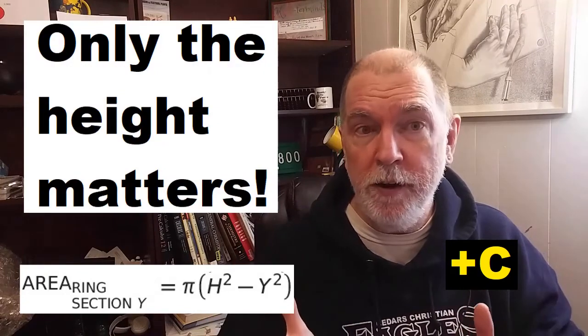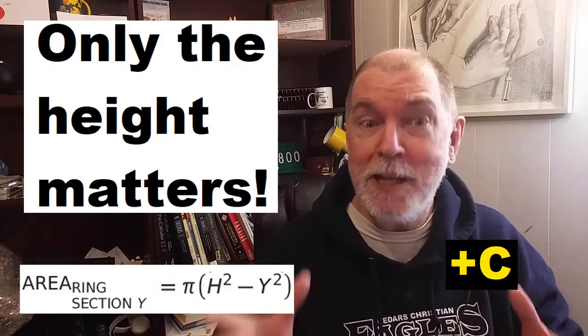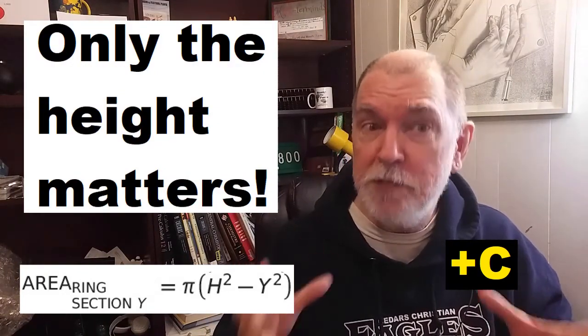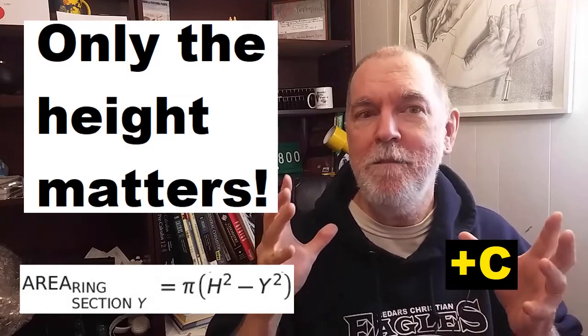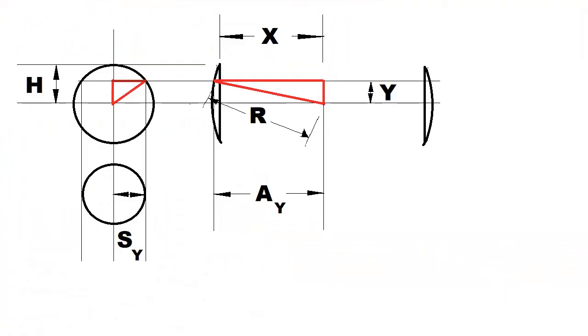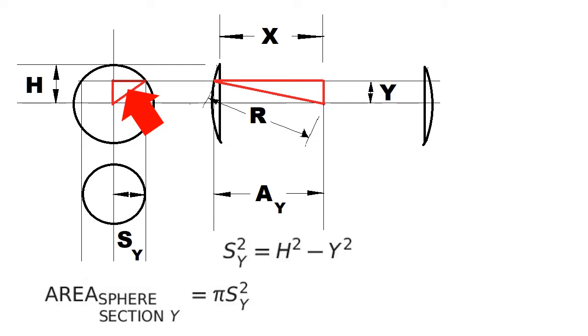The larger sphere that we cut the hole in to make this ring, its radius doesn't figure into this. Let's say that the cross section of the sphere at position y has a radius of s. Its area will be π times s squared. The hypotenuse of this right triangle is h. Pythagoras again lets us relate s to h and y.